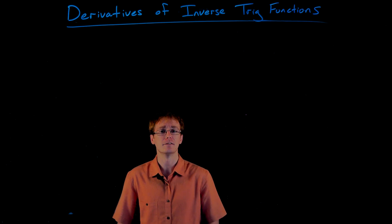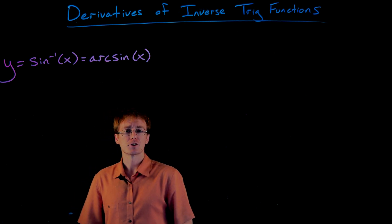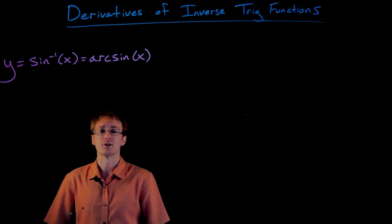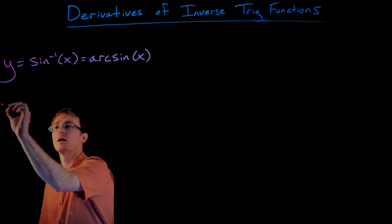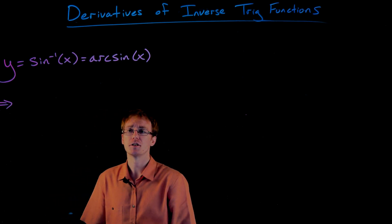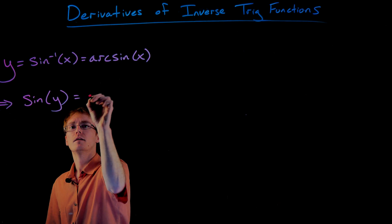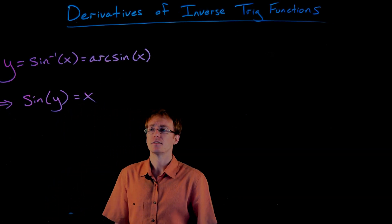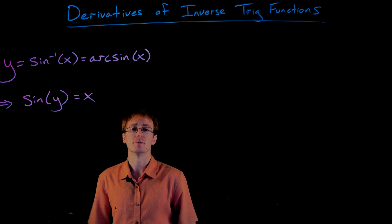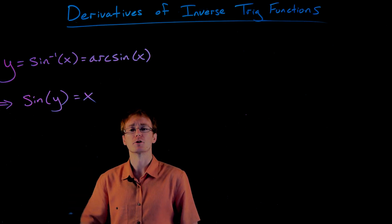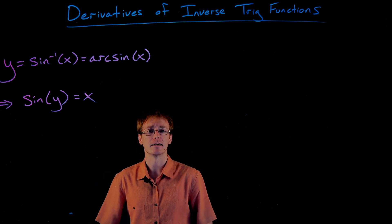So let's go ahead and start with our inverse sine function. Whenever we write y is equal to sine inverse of x, or arc sine of x — remember arc sine is just an alternative notation for inverse sine — what this means, coming from the definition of an inverse function, is if we were to take sine of our y value, it would give us x. This function just undoes what the sine function does, but there are a couple restrictions when it comes to what we're allowed to plug in and what comes out of this sine inverse function.